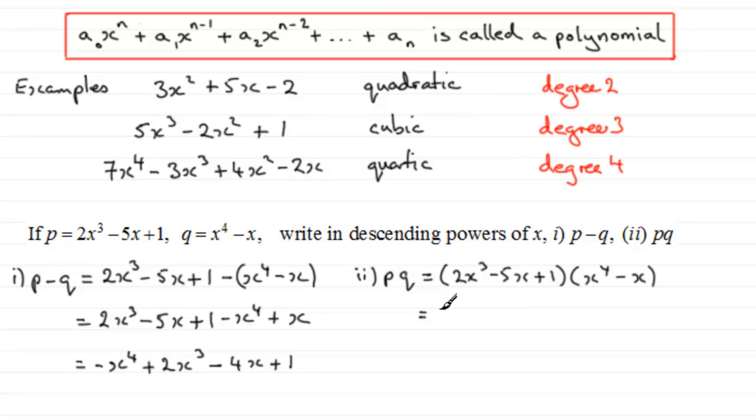2x cubed times x to the power 4 is going to be 2x to the power 7. Then 2x cubed times the next term, minus x, so that's going to be minus 2x to the power 4. Then we have minus 5x and we now multiply that with each of these two terms. Minus 5x times x to the power 4 is minus 5x to the power 5. Then minus 5x times minus x is plus 5x squared. We've exhausted that. Now we move on to the 1. Plus 1 times x to the 4 is plus x to the power 4, and 1 times minus x is minus x.